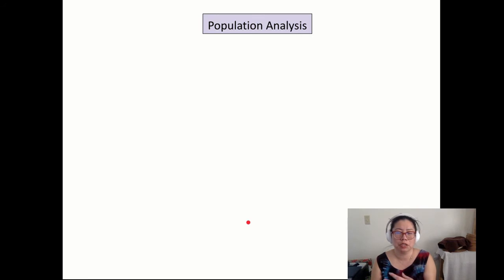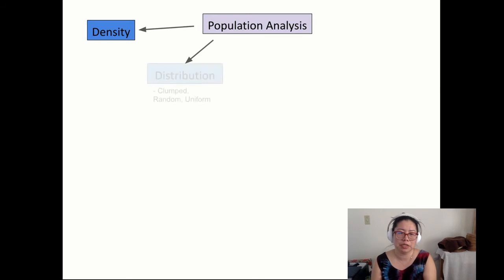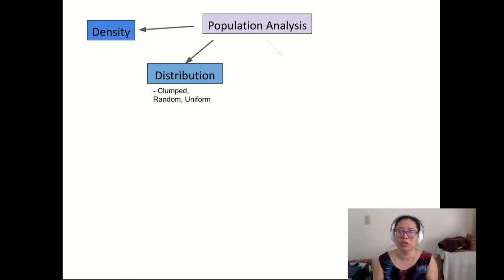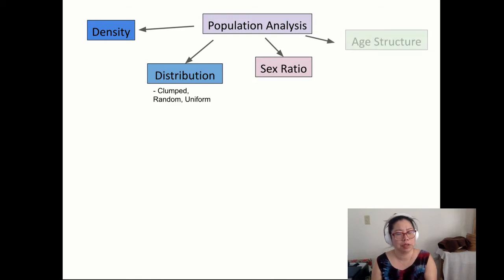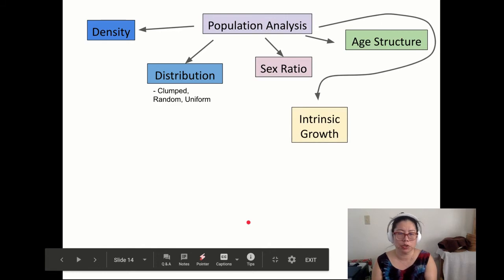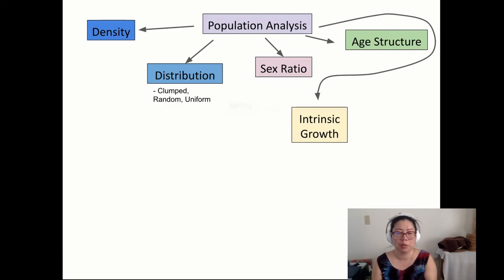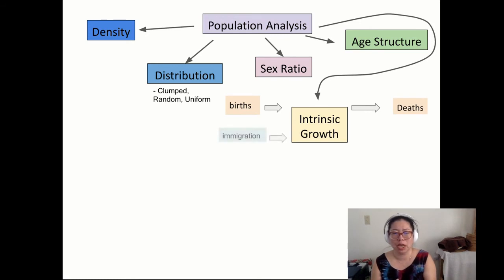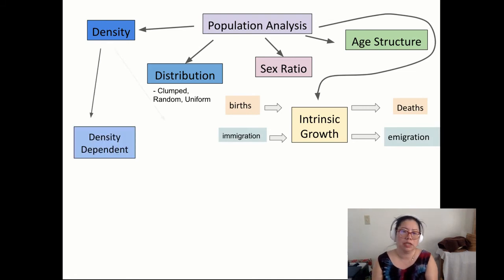Let's review what we've covered so far — population analysis. Different ways to analyze a population: density (how many in a certain area); distribution (what pattern — clumped, random, or uniform); sex ratio (number of males and females); age structure (how old they are); and intrinsic growth rate (how much the population changed in terms of growth or loss, considering births, deaths, immigrants coming in, and emigrations going out).